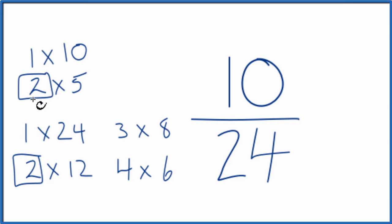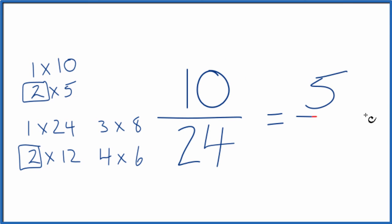So 10 divided by 2, that's the 5 there, and 24 divided by 2 is 12. So we've simplified 10 24ths down to 5 12ths.